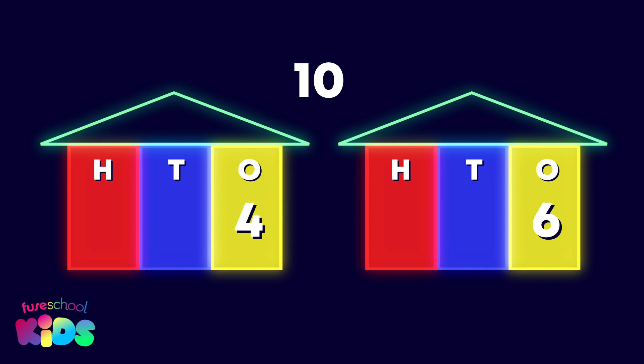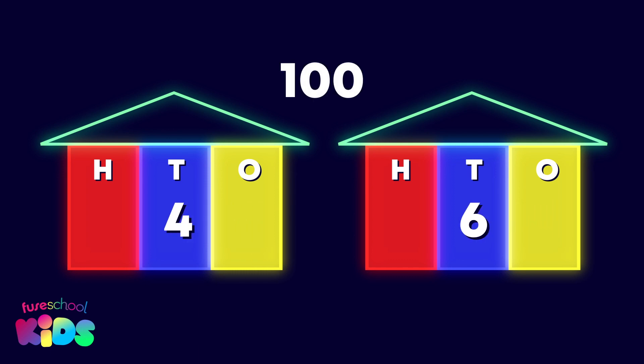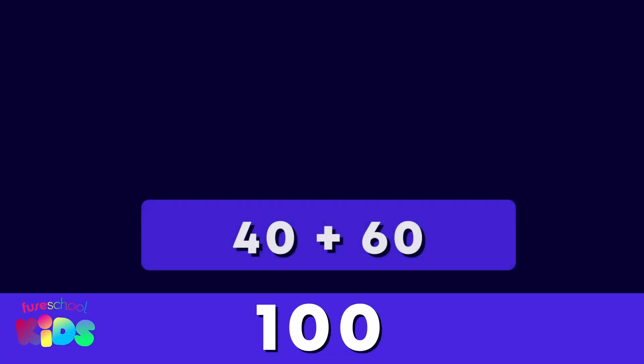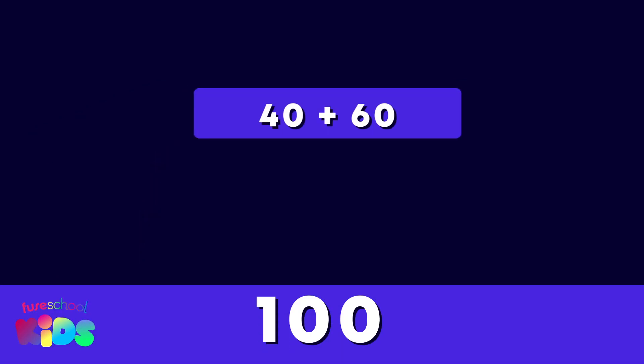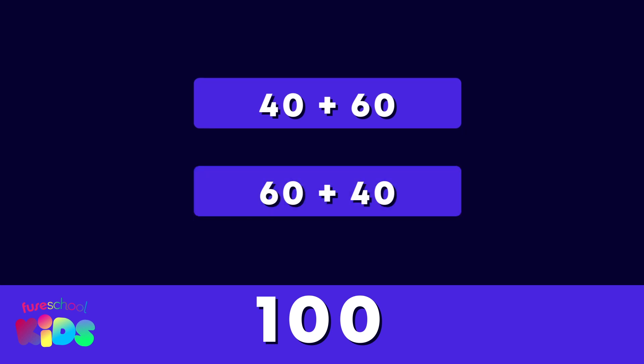Four and six make a bond to ten. To find the number bond to one hundred, the four and the six need to move to the tens place. What is the number bond to one hundred? Forty and sixty! Well done. Forty plus sixty equals one hundred.